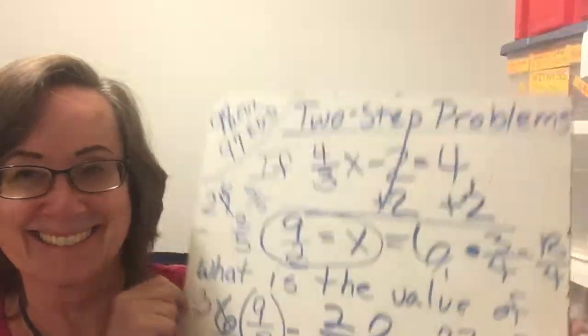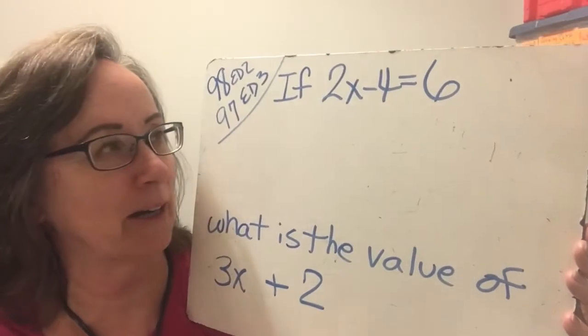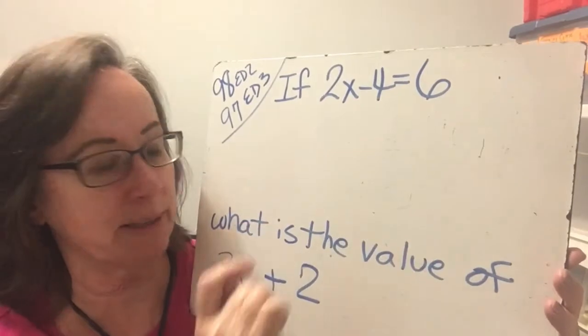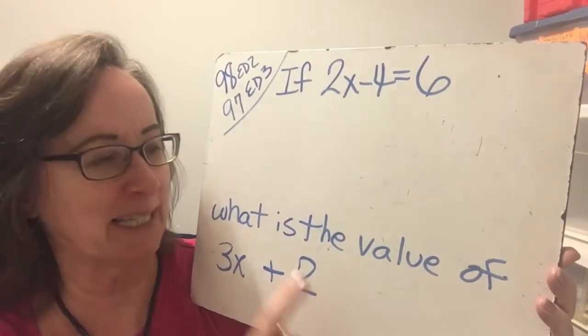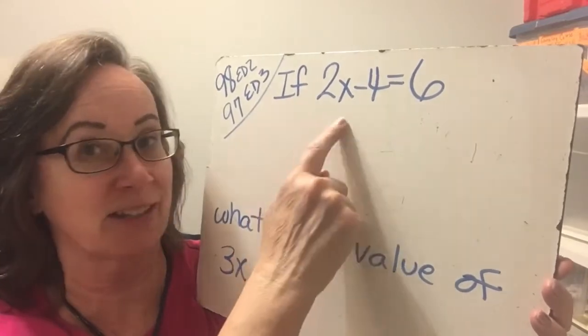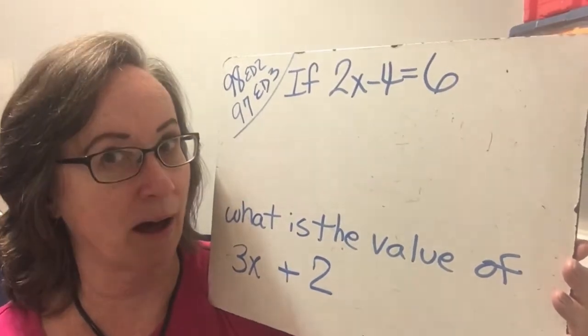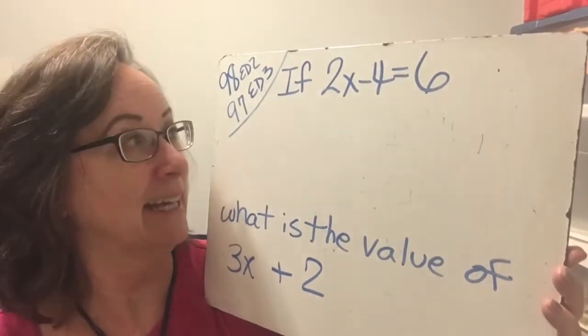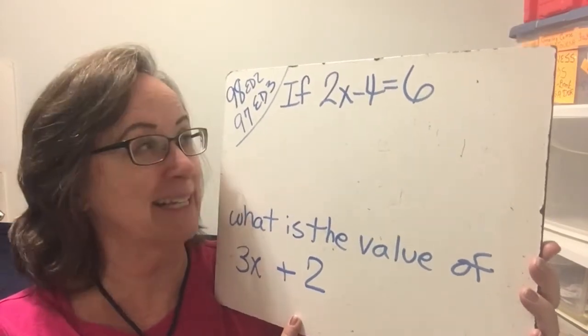Are you ready? Here's our first practice problem. So you need to get this down on your board so that you can go do it by yourself. If 2x minus 4 equals 6, what is the value of 3x plus 2? You might want to skip copying this part because all you really need is those two. You need to solve this one to figure out the answer to this one. So copy those down and pause your video.